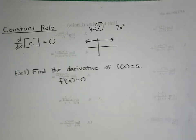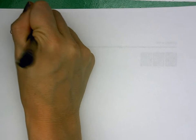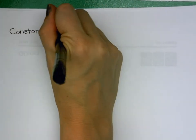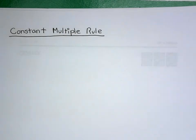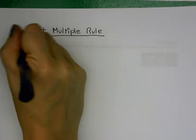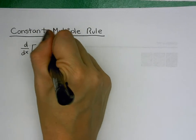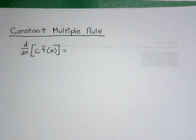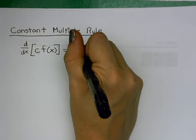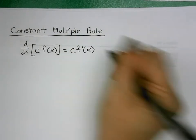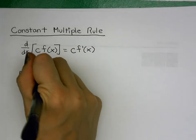Next is the constant multiple rule. This covers cases where a constant is multiplied to a function — like 7x³, where seven is a coefficient. The rule says the constant just hangs out; we don't do anything to it, and then we take the derivative of the function itself.